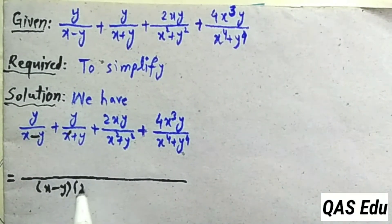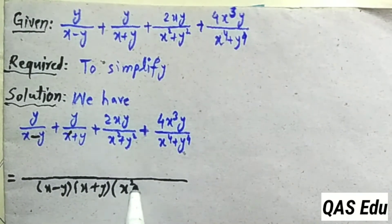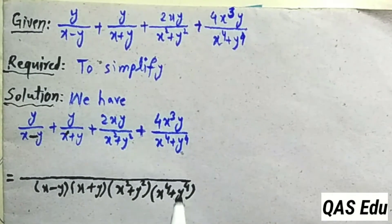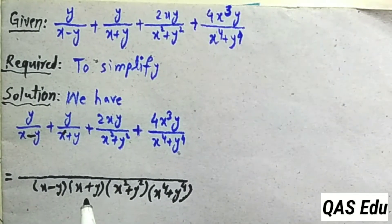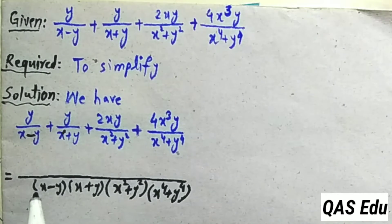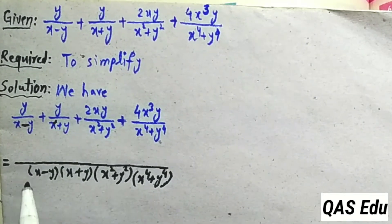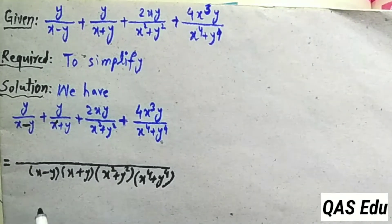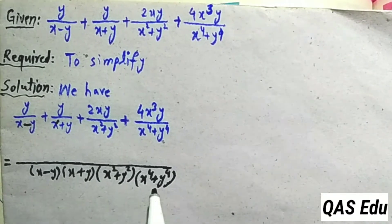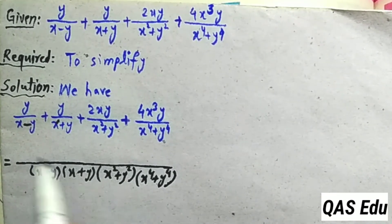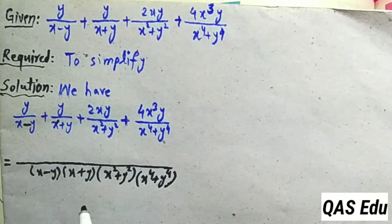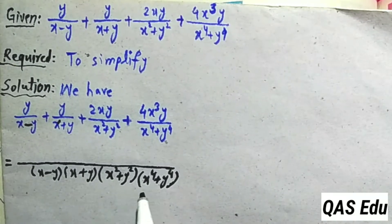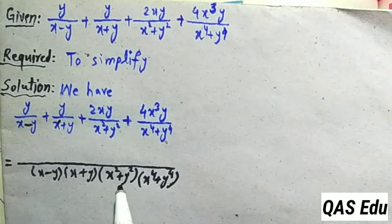Multiply (x-y) into (x+y) into (x²+y²) into (x⁴+y⁴). The fraction — the denominator LCM shows that will multiply y. Then (x-y) multiplied by (x-y), then (x-y) cancels — x minus y, all.